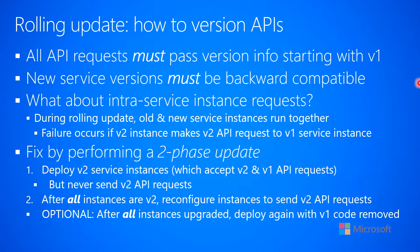New service versions must be backward compatible, and I've talked about this in more detail earlier in this course. But what about intra-service instance requests? During a rolling update, old and new service instances are going to be running together at the same time within the same cluster. Failure will occur if a version 2 instance makes a version 2 API request to a version 1 service instance.